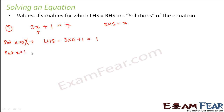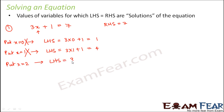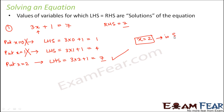Now let us try x equal to 1. The left hand side is 3 into 1 plus 1, that is 4. Since 4 is not equal to 7, x equal to 1 is also not the solution. Now let us try x equal to 2. The left hand side is 3 into 2 plus 1 — that is 6 plus 1, which is 7. Since the left hand side equals the right hand side, x equal to 2 is the solution for this equation.